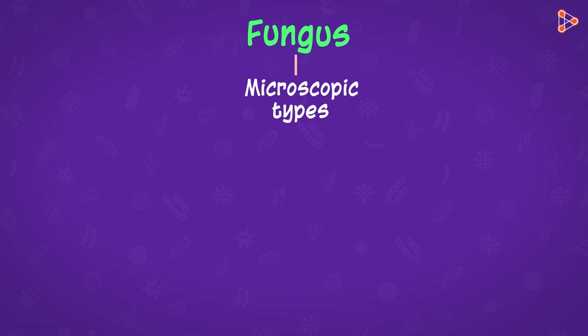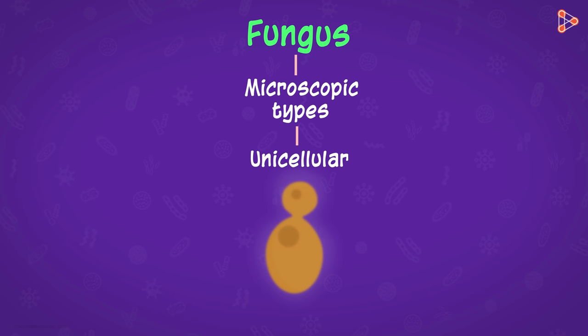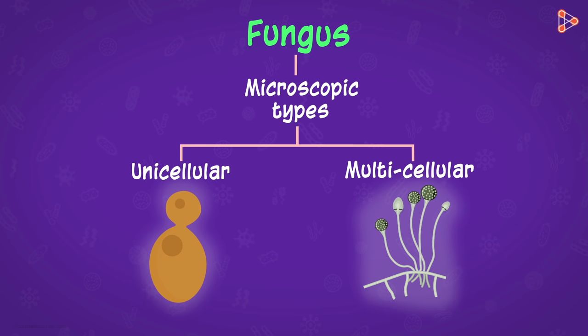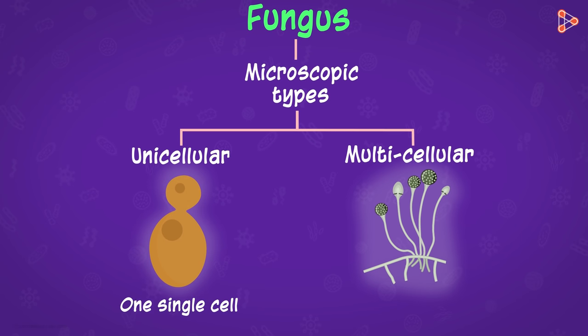Let's talk about the microscopic types first. These being too small, what do you think will be their structure? Do you think they will always be unicellular? Well, not all. Only a few types like yeast are unicellular, whereas others, in spite of being microscopic, are multicellular in nature. The unicellular forms exist as one single cell which performs all the activities efficiently. On the other hand, the multicellular ones have bodies comprising of many cells that coordinate to bring about smooth processes.